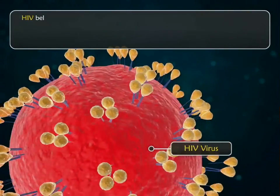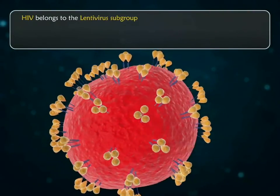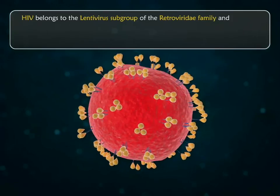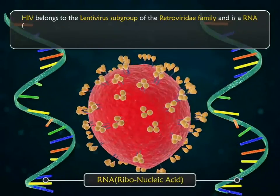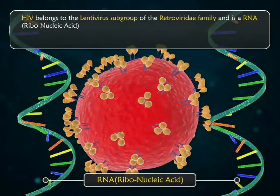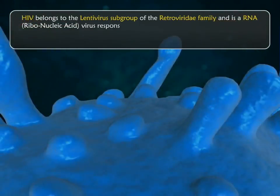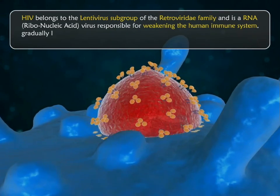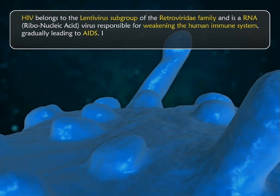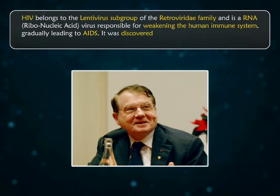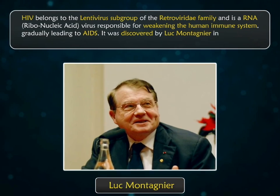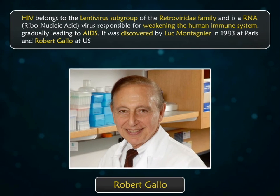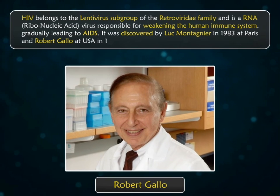HIV belongs to the lentivirus subgroup of the retroviridae family and is an RNA (ribonucleic acid) virus responsible for weakening the human immune system, gradually leading to AIDS. It was discovered by Luc Montagnier in 1983 in Paris and Robert Gallo in the USA in 1984.